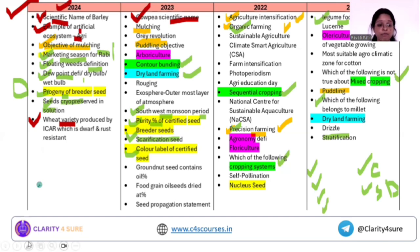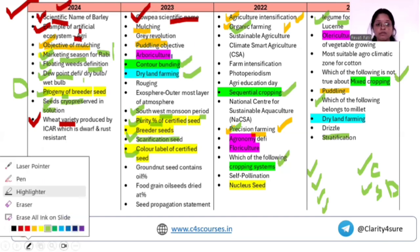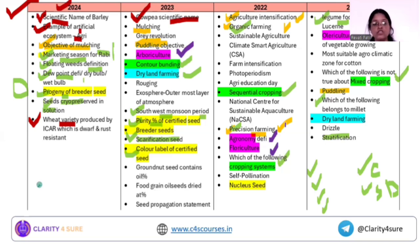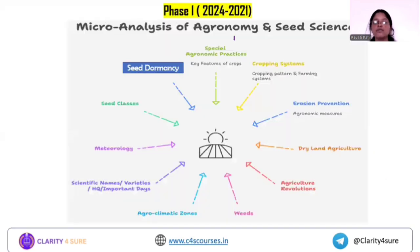An important part is the branches of agriculture — the definition will be provided and you need to identify which branch they are talking about. It is really easy and simple. So here are the broader headings from which questions are coming: special agronomic practices, key features of different crops, cropping system, pattern, and farming system.